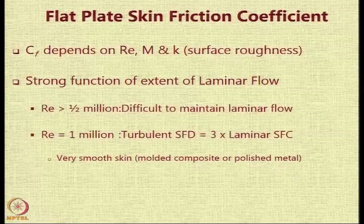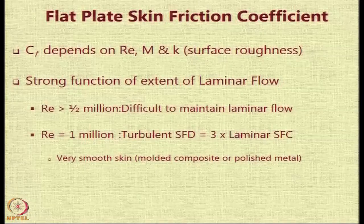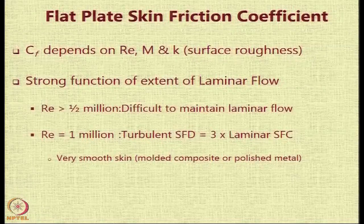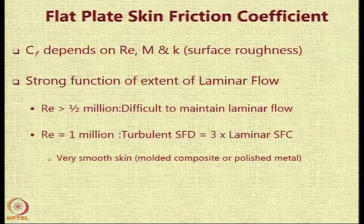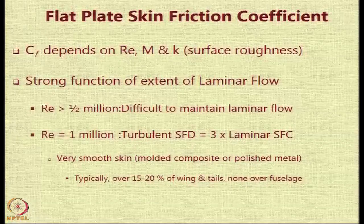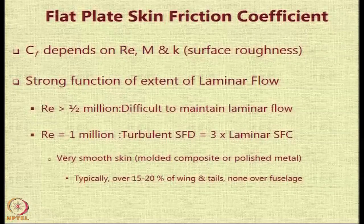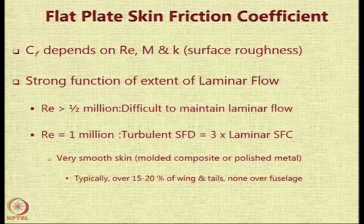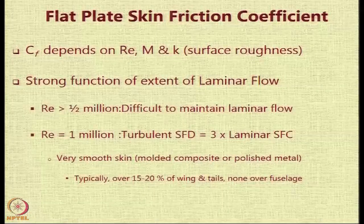At a Reynolds number of 1 million, the turbulent skin friction drag is 3 times the laminar skin friction drag. If you are able to use very smooth skin — using polished metal or molded composite — you might be able to maintain laminar flow over around 15 to 20 percent of the wings and tails, but on the fuselage it is very difficult to maintain laminar flow; maybe 5 percent of the fuselage, perhaps less.